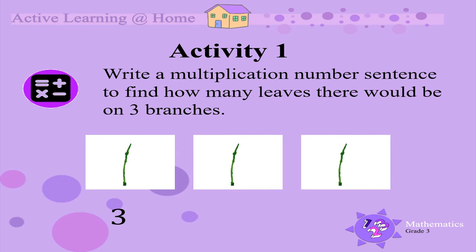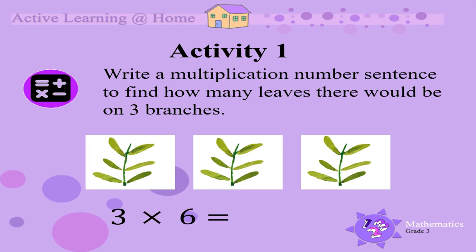There are three branches. Each branch has six leaves. So we multiply three and six. Three times six is... Eighteen.